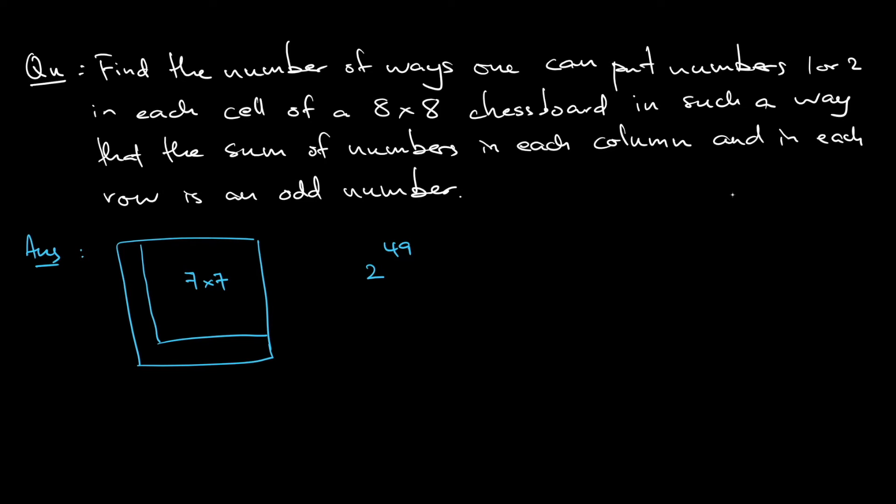And then think about that. Let's say focus on this column, the last column. If I can put any number 1 or 2 in each cell, that means that the sum so far, the sum of this column, which is the 7 by 1 so far, half of the time is odd, half of the time is even.